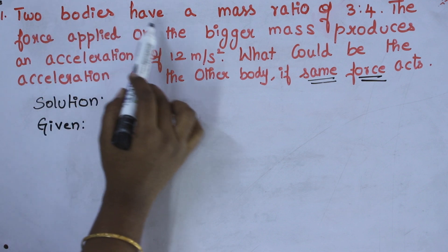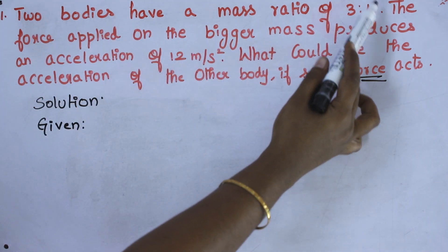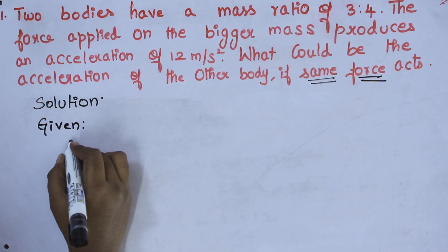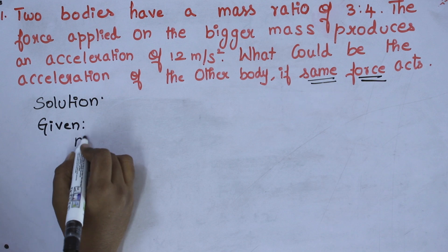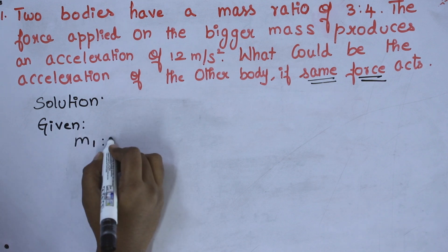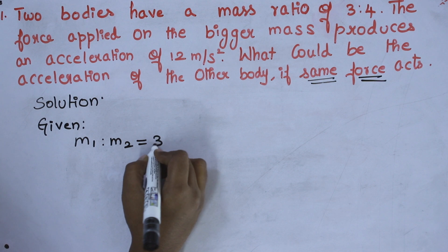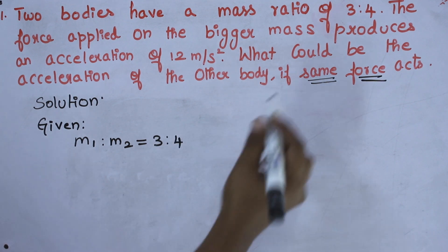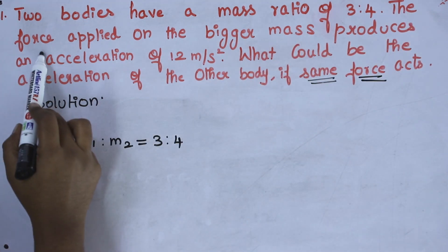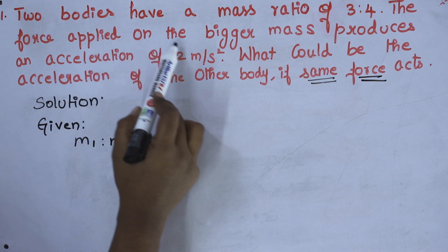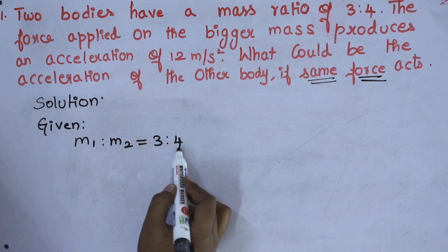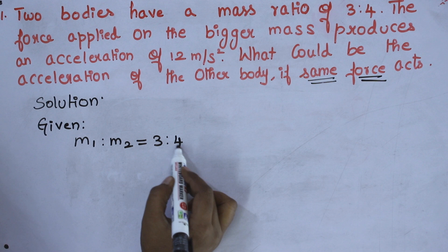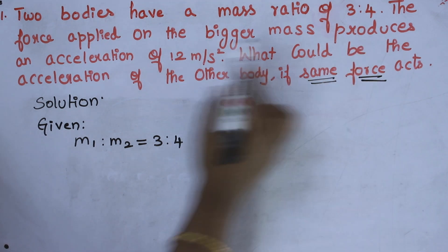Two bodies have a mass ratio of 3 is to 4. I am writing mass as M1 is to M2 equals 3 is to 4. The force applied on the bigger mass — 4 is the bigger value — produces an acceleration.